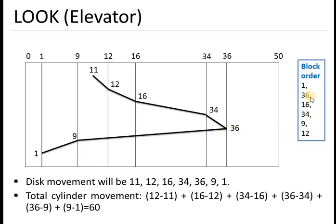One point to note: in this example the initial direction was forward (upward), but this is just an assumption. If the head were initially moving in the backward (downward) direction starting from 11, then it would first serve 9 and then 1 before reversing upward. So the direction assumption matters when solving LOOK algorithm problems.